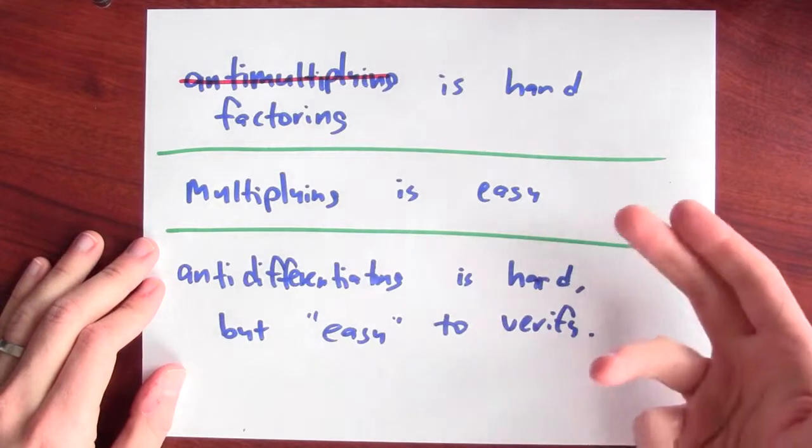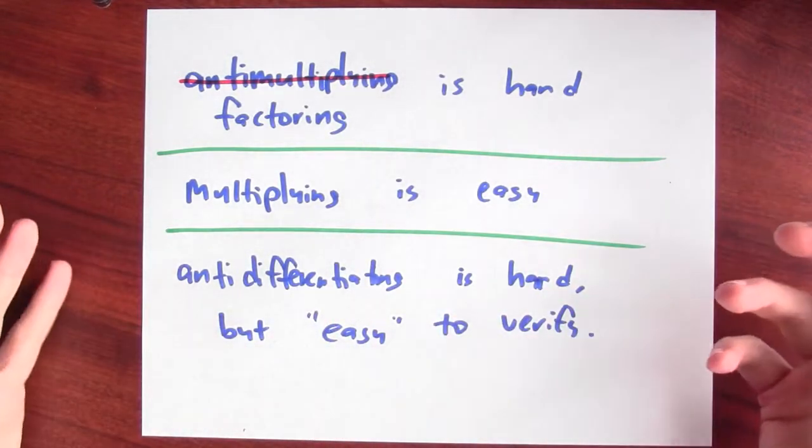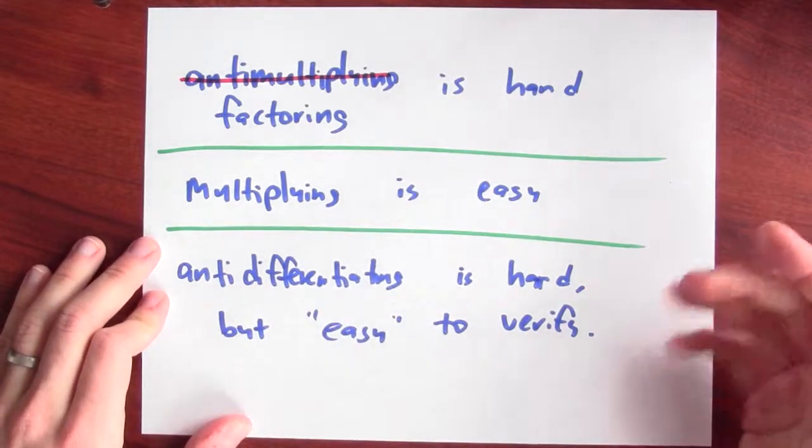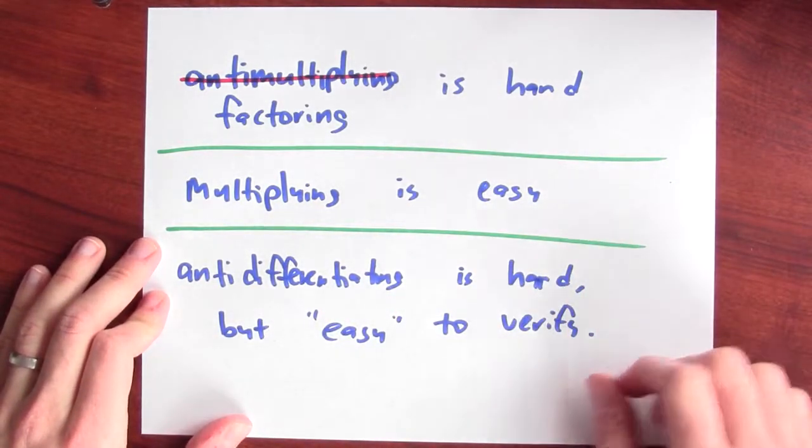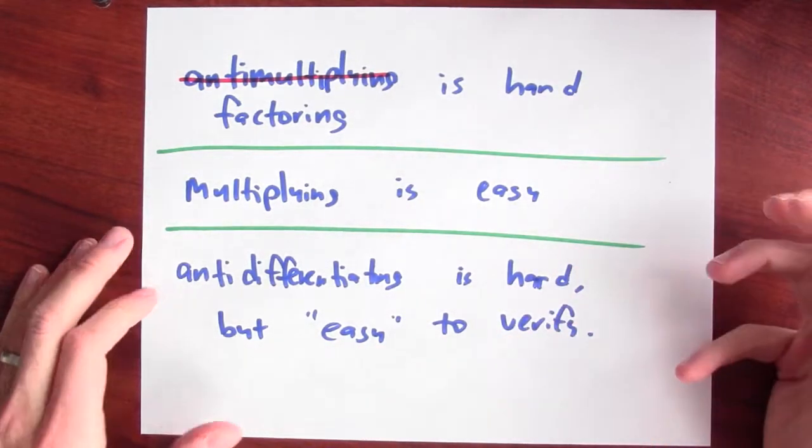It's the same story here with derivatives. Anti-differentiating is hard. It seems hard to figure out what the anti-derivative is. But once you show me a guess, I can verify that your guess is correct by doing the easy step of just differentiating and seeing if you're right.